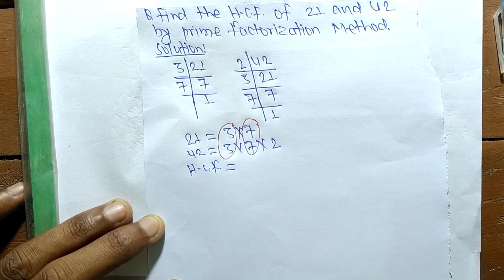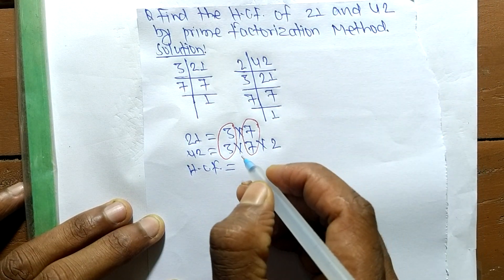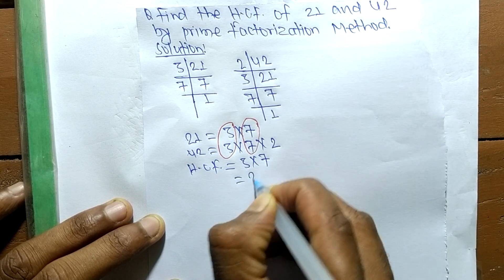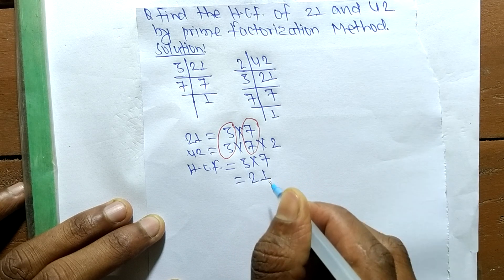So the HCF is the product of common factors 3 and 7, which is equal to 21.